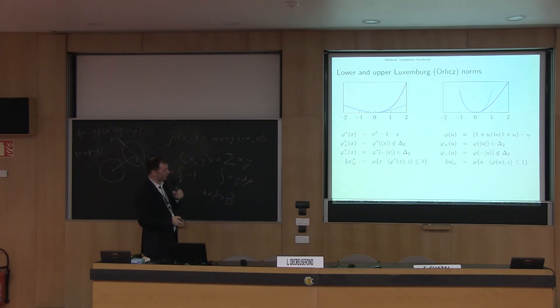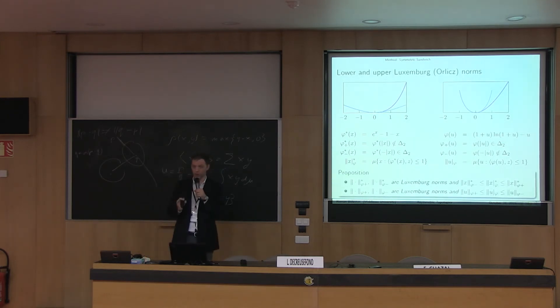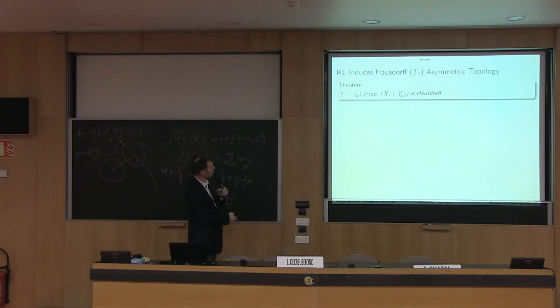This gives us two symmetric norms, two Orlicz or so-called Luxembourg norms. There's a proposition here that phi plus and phi minus star in this space are Luxembourg norms with the following bounds, upper and lower bound on our original asymmetric norm. The same happens but now you see plus and minus have exchanged here because of this polarity. That gives us a couple of results.